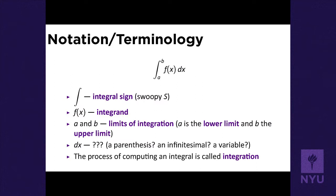That long S shape is an integral sign — it says we're taking an integral. The function after the integral sign is called the integrand. The a and b stand for the upper and lower limits of integration, indicating the interval over which we're finding the area. The dx indicates the variable of integration.